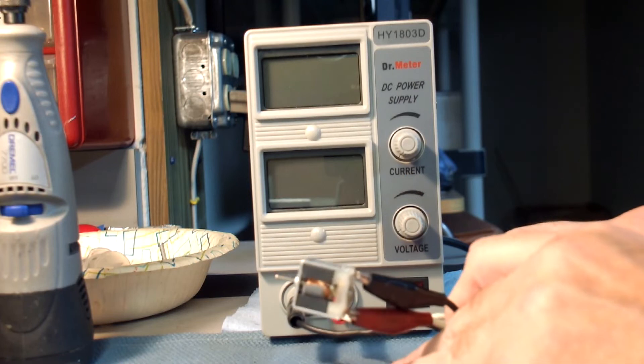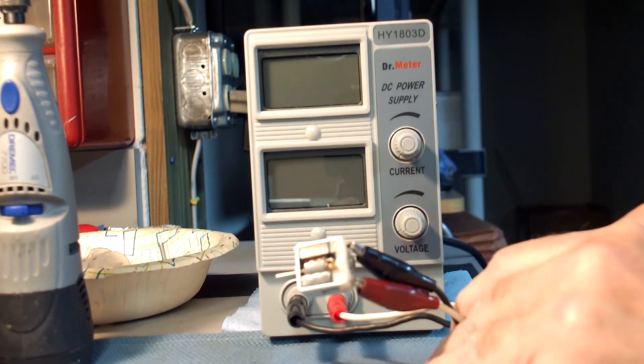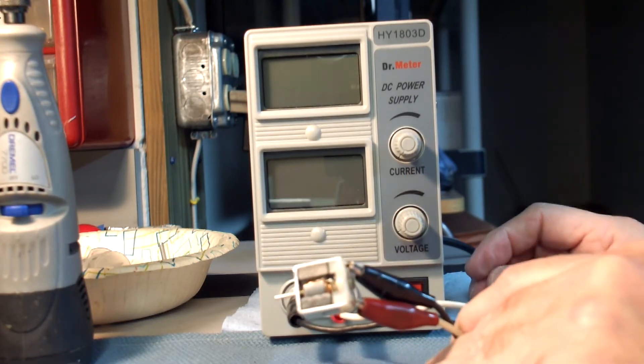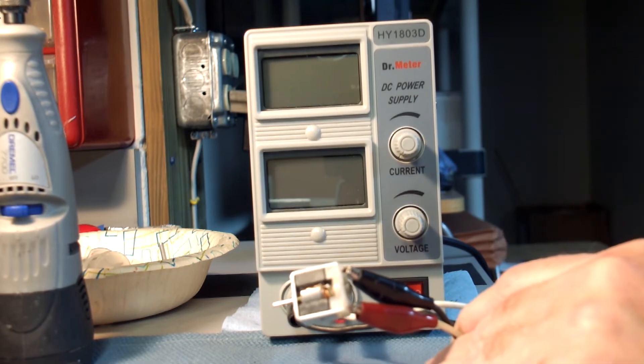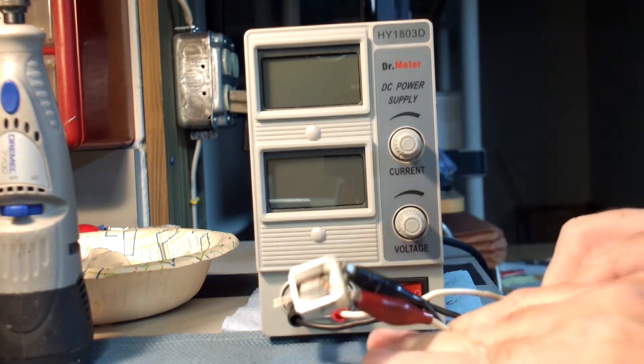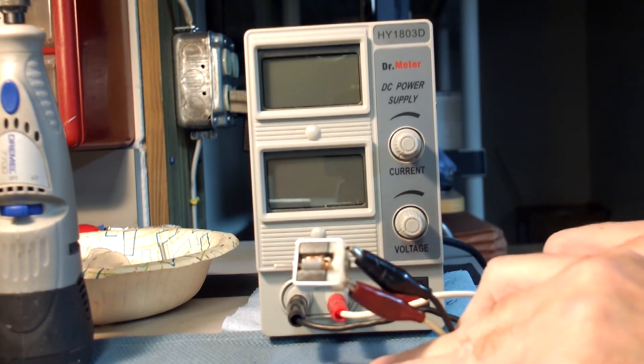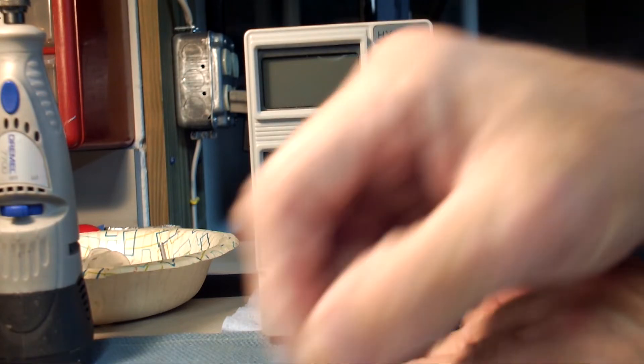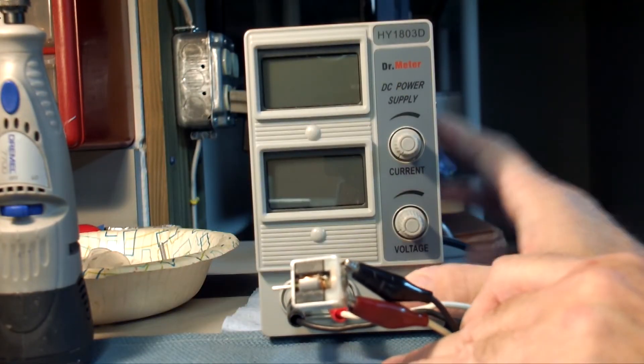Alright, so here we have one of these 28 gauge .1 ohm armatures. We haven't figured out how to make them last. I don't know if there is any way to make them last. The commutators are just stock commutators, the same basic commutator that's on a 6 ohm motor. So, let's give it some power.